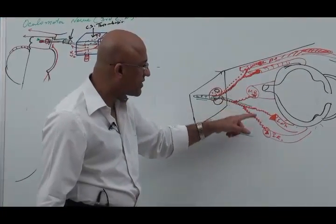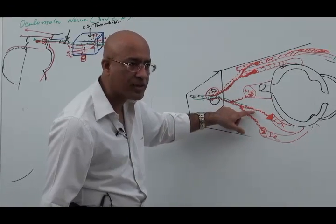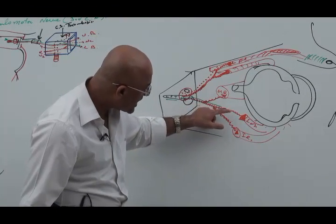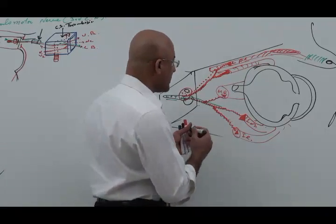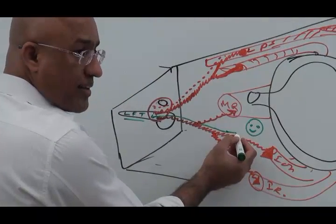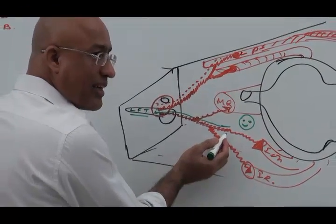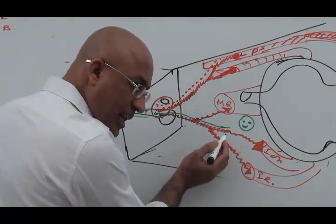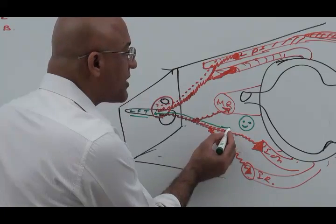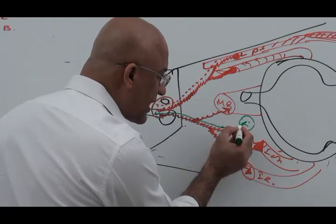Parasympathetic fibers go along the lower division. On the way, lower division gives branches to medial rectus and inferior rectus. Then parasympathetic fibers go along the final branch which is going towards inferior oblique. But they don't end up here. On the way they will find ciliary ganglion. The inferior branch from third cranial nerve, the lower division branch going to the inferior oblique, gives a short parasympathetic root to ciliary ganglion.